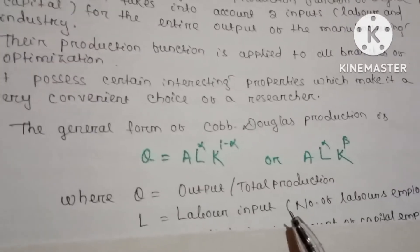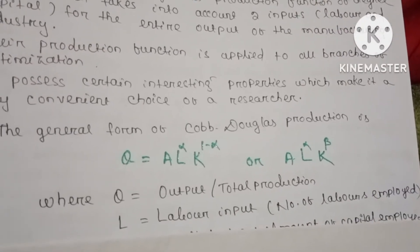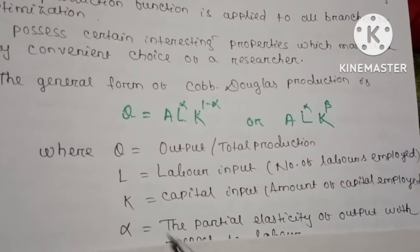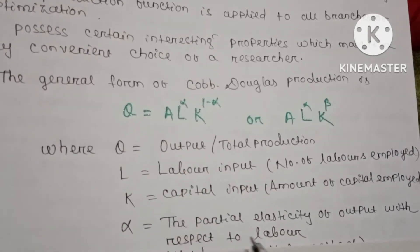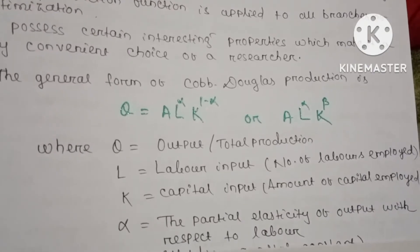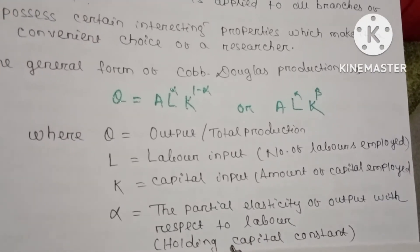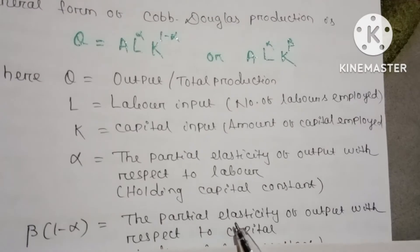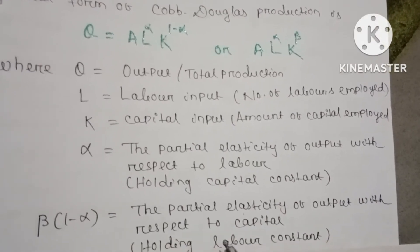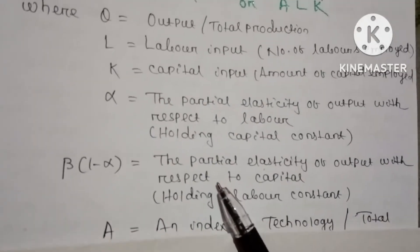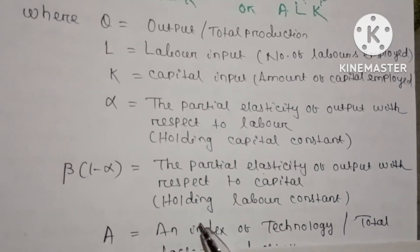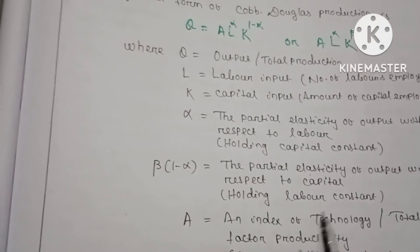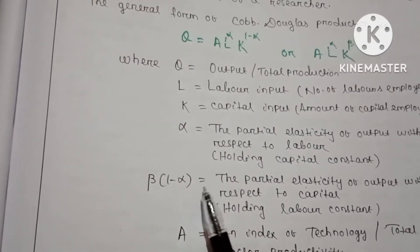L represents labor input, that is the number of laborers employed. K represents capital input, or the amount of capital employed. Alpha (α) is the partial elasticity of output with respect to labor, keeping capital constant. Then (1−α) represents the partial elasticity of output with respect to capital, keeping labor constant. A is an index of technology, or total factor productivity.